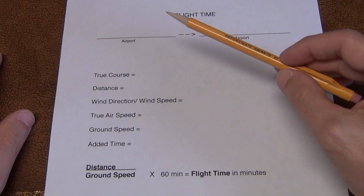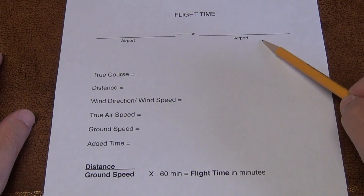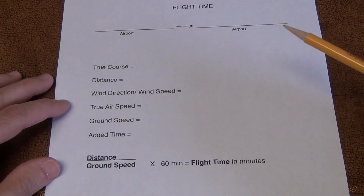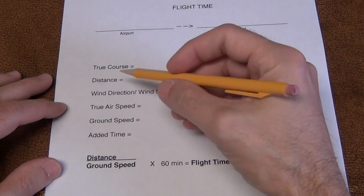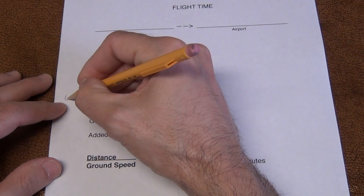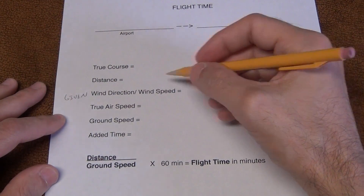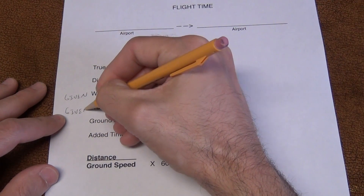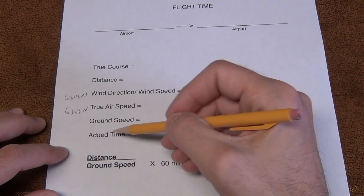The first thing you're going to want to do when you read your questions is identify the airport from which you're leaving and the airport to which you're arriving. In the question, you're going to be given certain data. The first thing they give you is the wind direction and the wind speed between your two airports — that's given. The true airspeed is also given in every question.